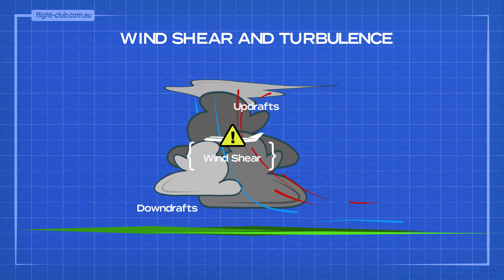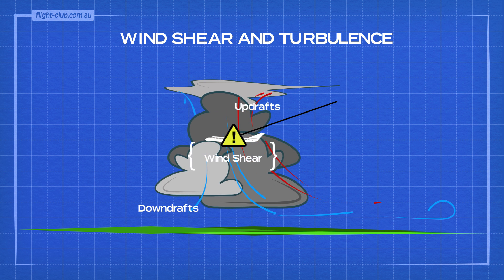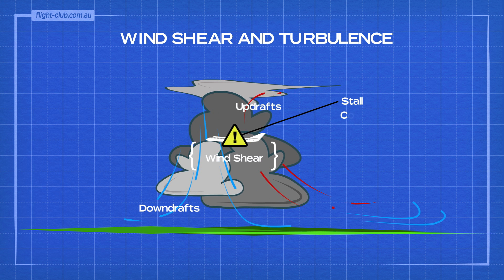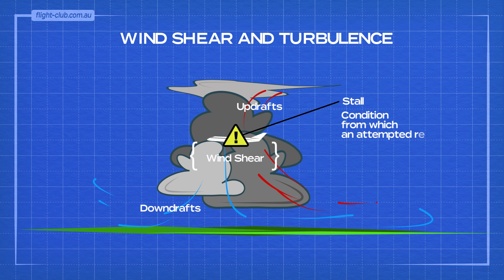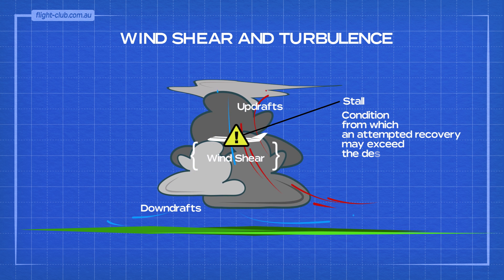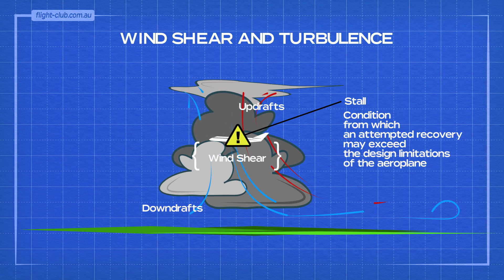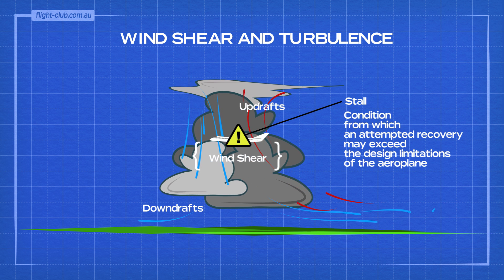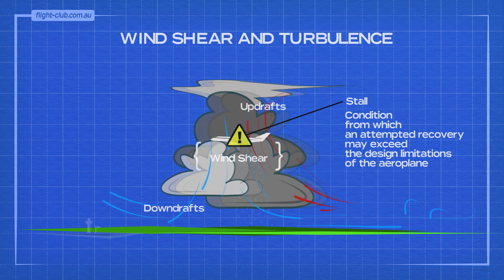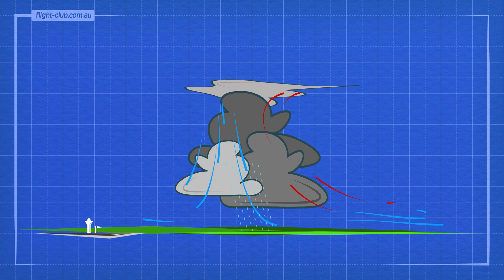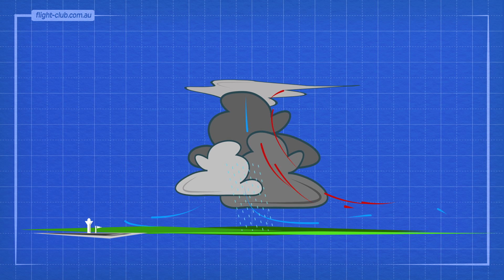Violent changes in attitude may induce a stall or a condition from which an attempted recovery may exceed the design limitations of the aeroplane. The outflow from the cloud's downdraft produces damaging winds on and near the ground.